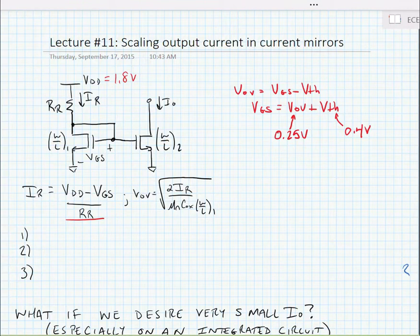And we know that the overdrive voltage VOV is equal to the square root of two times the current going through the transistor divided by mu C-aux times W over L.